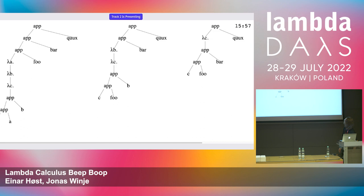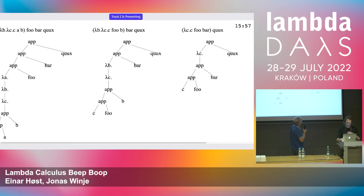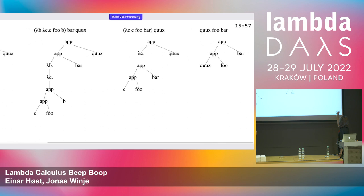One of the applications disappears, the lambda 'a' disappears, and the 'a' symbol down there is replaced by 'foo'. You keep going, and the same thing happens until you're left with two function applications you can't reduce further because those are just free variables — so you stop there.